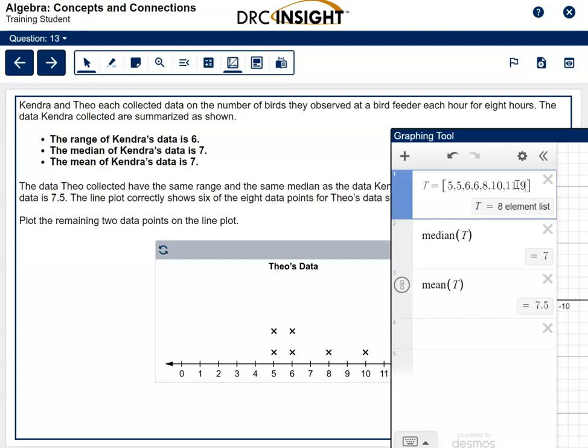Let's check it again. We've got a range that is 6. From 5 to 11 is 6. That'll work. The median of Kendra's is 7. The median of Theo's is 7. The mean of Kendra's is 7, and the median and the mean are 7, but Theo's mean is 7.5, because that's what it tells us it wants right here. So the next trick, and this is fun, we've got to click on this graph and add these points.